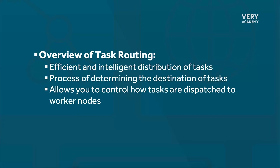I apologise I don't have any fancy graphics here, but let's just go through an overview of task routing. Task routing is a crucial feature in Celery that enables efficient and intelligent distribution of tasks within a distributed task queue system. Task routing refers to the process of determining the destination of tasks based upon predefined rules or conditions, allowing us to control how tasks are dispatched to worker nodes and manage their execution across the available resources.